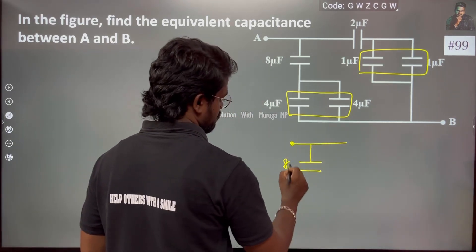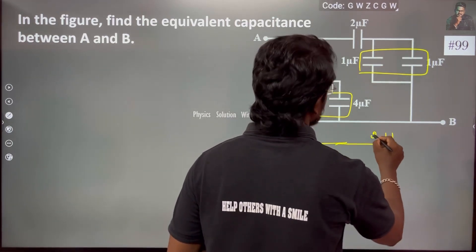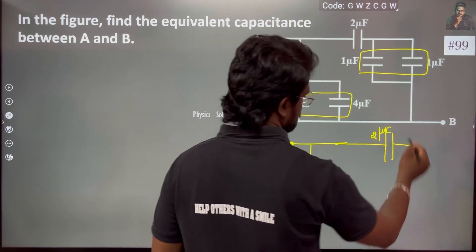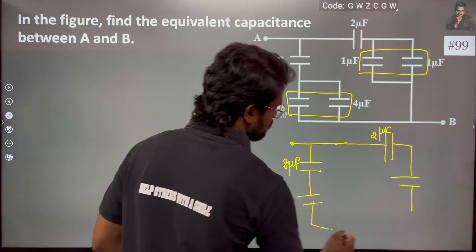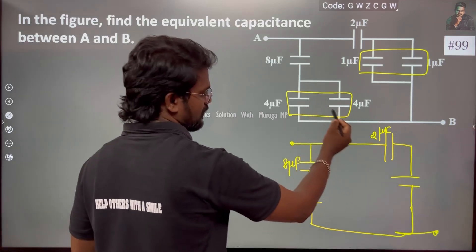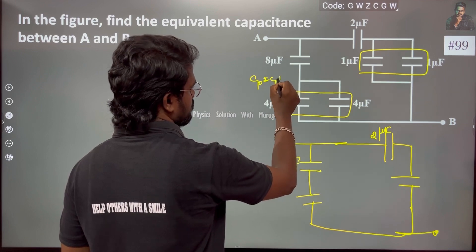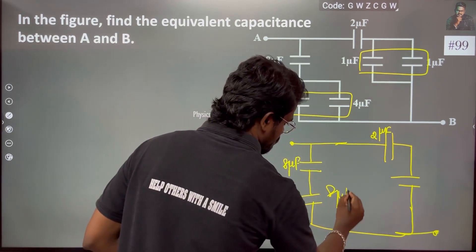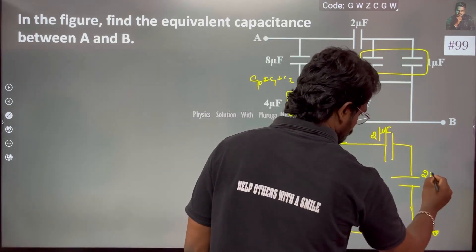Here is point A. This is an 8 microfarad capacitor and here is a 2 microfarad capacitor. So we just add them in parallel: Cp = C1 + C2, giving us 8 microfarad and 2 microfarad.